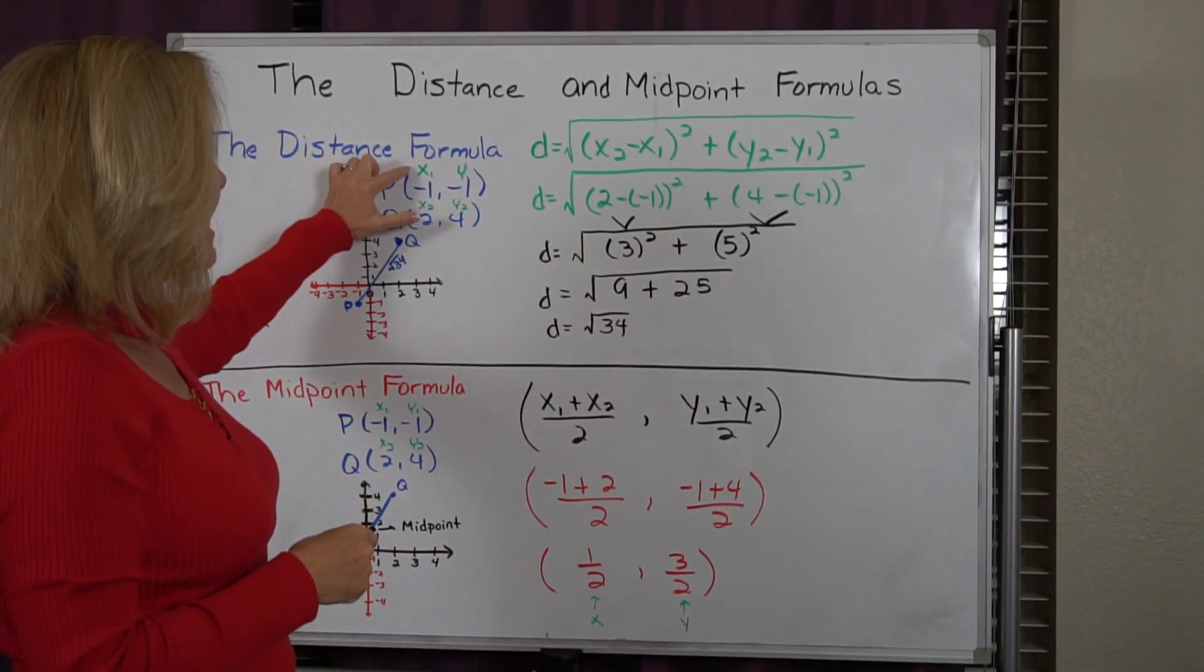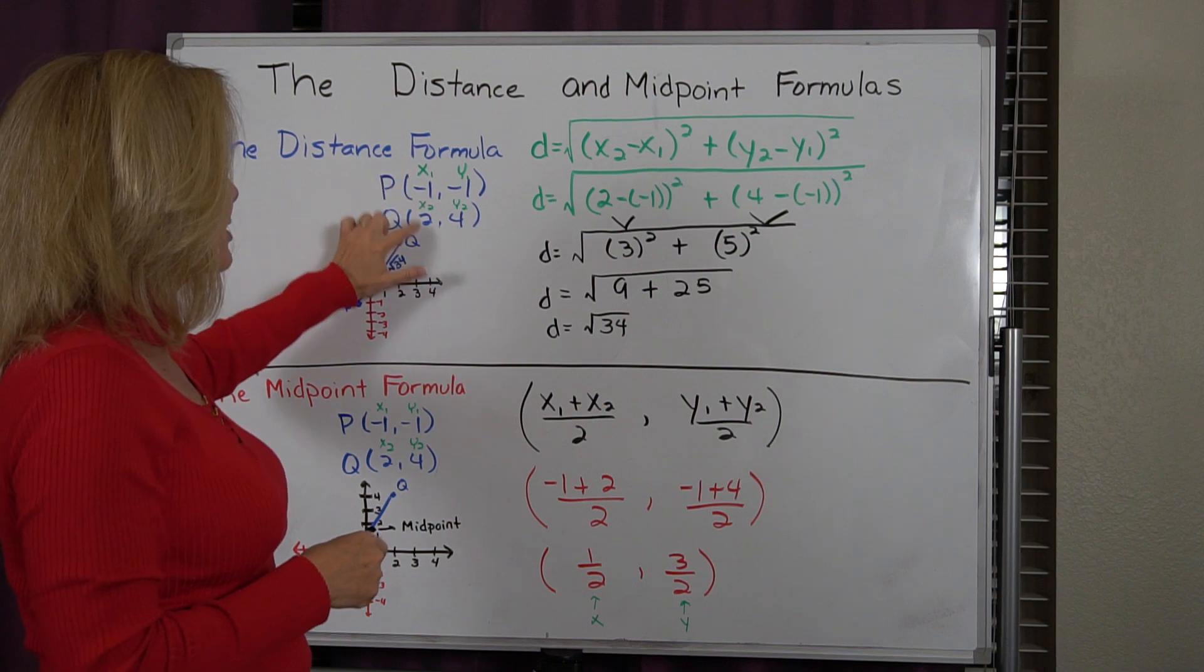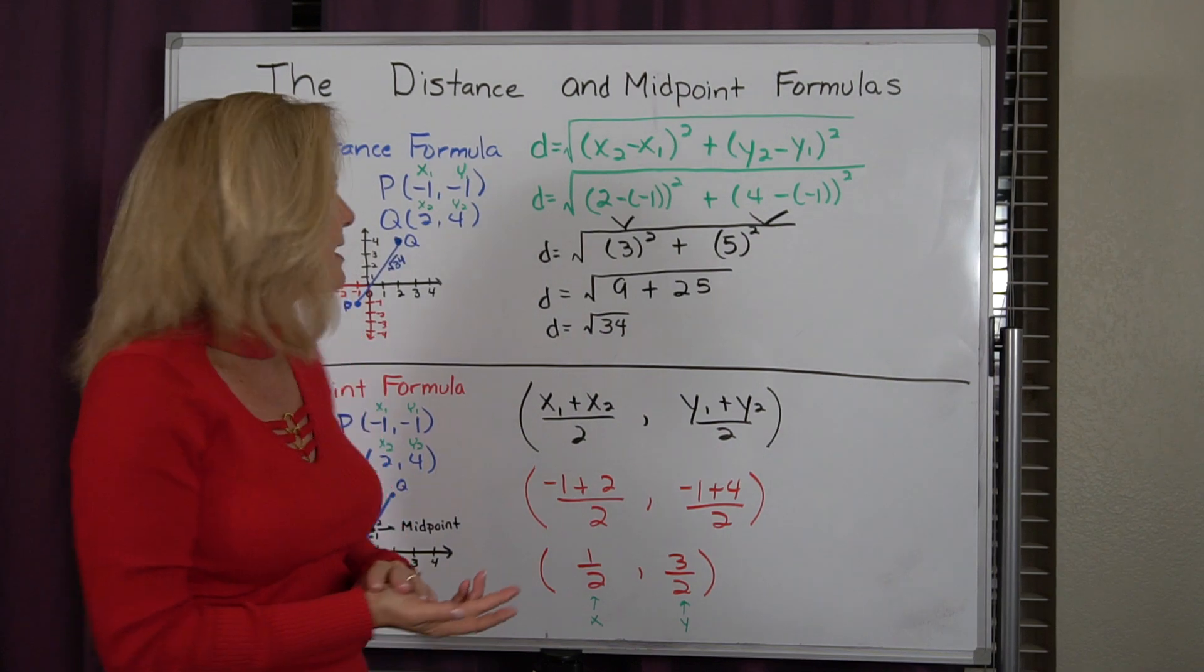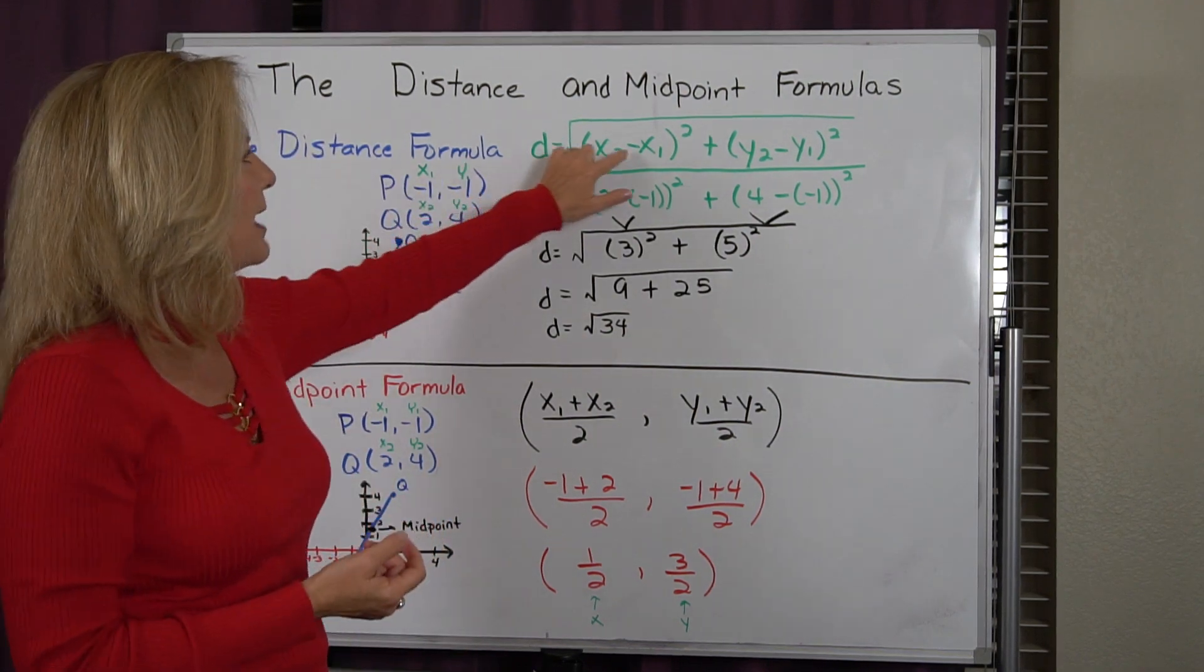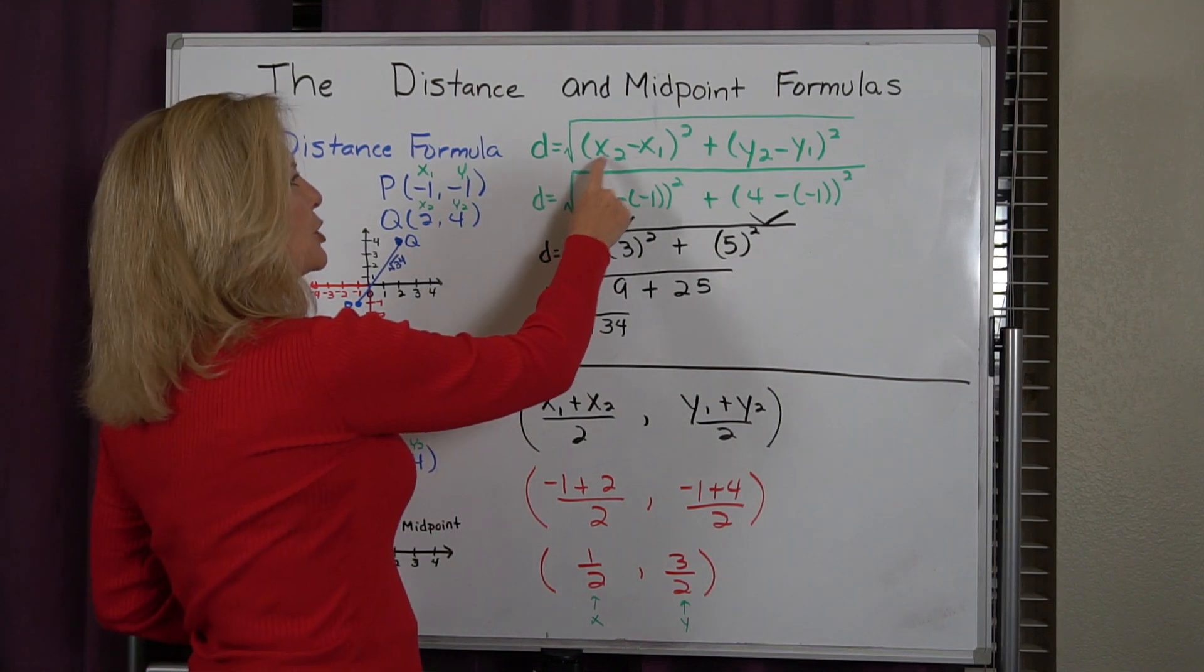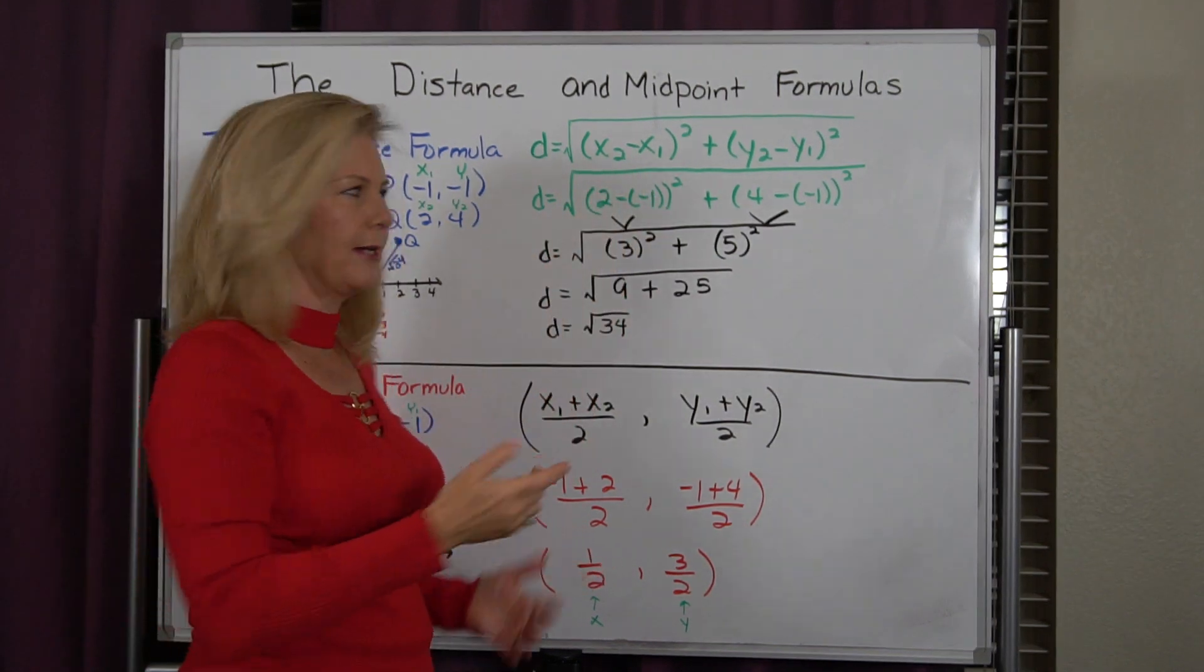If I look at my x's, I have two different x's, one for my P, one for my Q. And I just call the P x₁ and the Q x₂. And if I go to find the difference, notice that's a negative. And I'm going to do x₂ minus x₁.